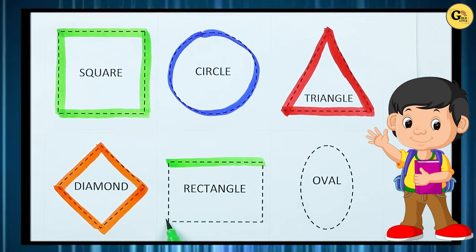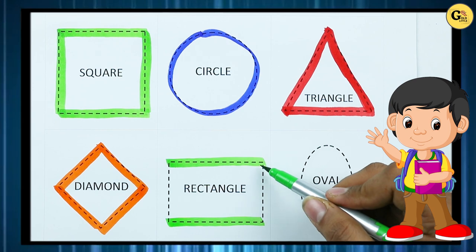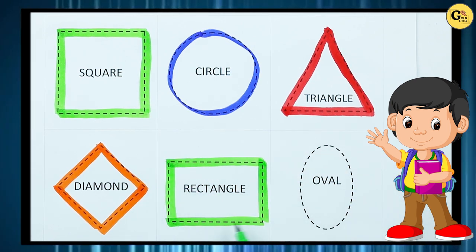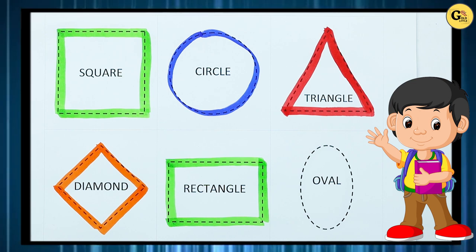One sleeping line, two sleeping line, one standing line, one standing line. It's a rectangle with green color.